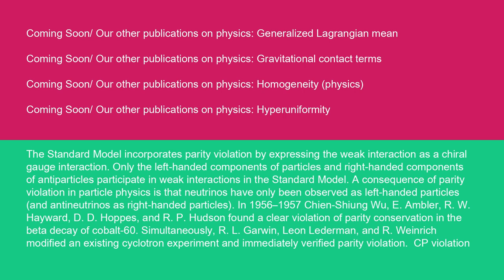In 1956 to 1957, Chien-Shiung Wu, E. Ambler, R. W. Hayward, D. D. Hoppes, and R. P. Hudson found a clear violation of parity conservation in the beta decay of cobalt-60. Simultaneously, R. L. Garwin, Leon Lederman, and M. Weinrich modified an existing cyclotron experiment and immediately verified parity violation.